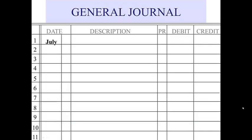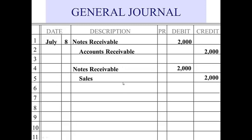Notes can originate in a few different ways. We can extend time for our customers to pay us by exchanging their accounts receivable for a notes receivable. So we will credit accounts receivable for $2,000 to remove it from the books, and then debit notes receivable to replace it with the note for $2,000. Notes receivables are assets, so they're debited when they're increased. Another situation is when we make a sale and collect a note — a sale to a customer for $2,000 may result in a notes receivable for $2,000. Or we could lend someone money, where we would credit our cash and debit notes receivable for the amount of the note.